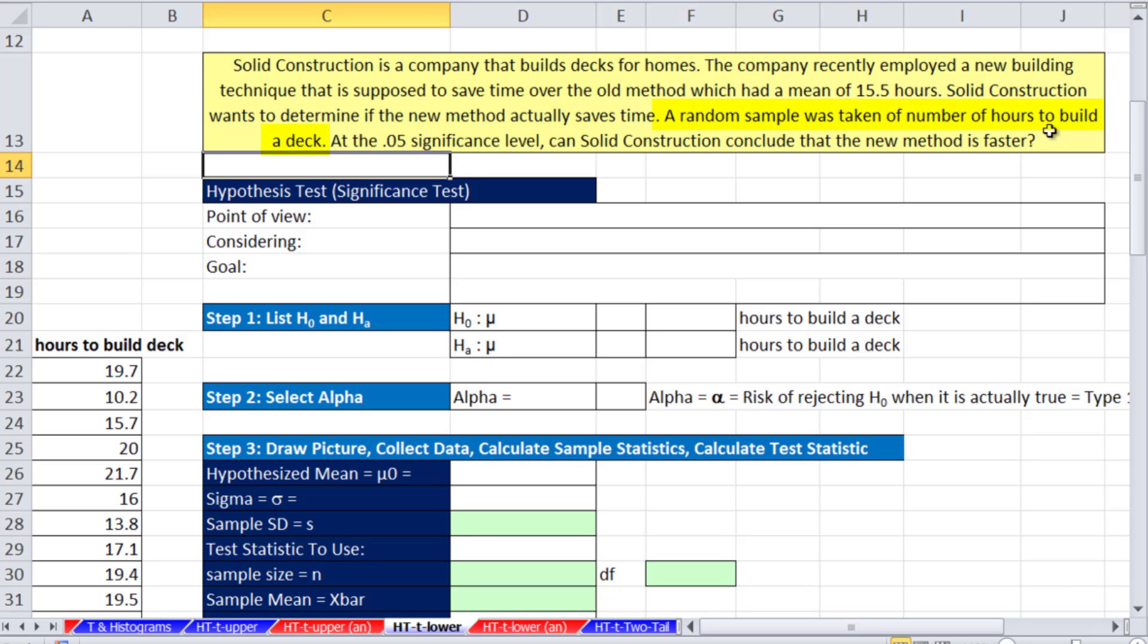Solid Construction wants to determine if the new method actually saves time. A random sample was taken of the number of hours to build a deck. At the 0.05 significance level, can Solid Construction conclude that the new method is faster?